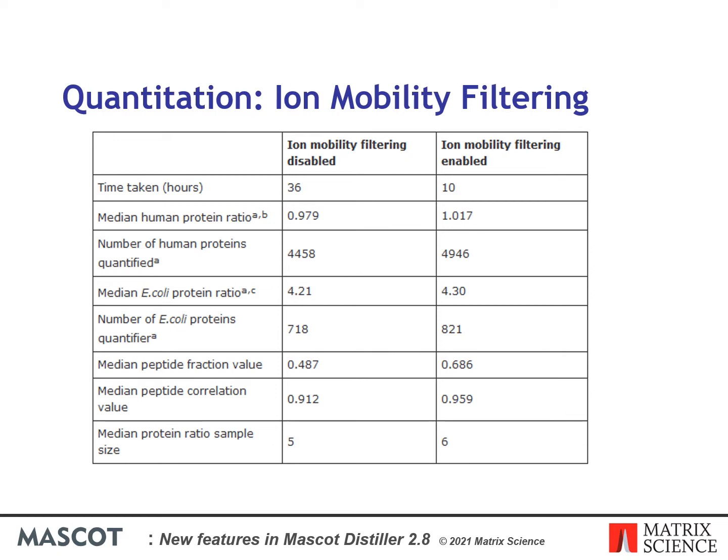Enabling filtering significantly speeds up quantitation because less data has to be processed. Median peptide fraction and correlation values also improved, showing the quality and signal-to-noise of the data are better with filtering enabled, allowing more peptide ratios to pass the quantitation quality thresholds. The median number of quantitative peptide sequences used to calculate the protein ratios increased from 5 to 6, and more proteins with at least two distinct peptide sequences were quantified.